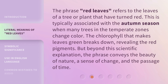The phrase 'Red Leaves' refers to the leaves of a tree or plant that have turned red. This is typically associated with the autumn season when many trees in the temperate zones change color. The chlorophyll that makes leaves green breaks down, revealing the red pigments. But beyond this scientific explanation, the phrase conveys the beauty of nature, a sense of change, and the passage of time.